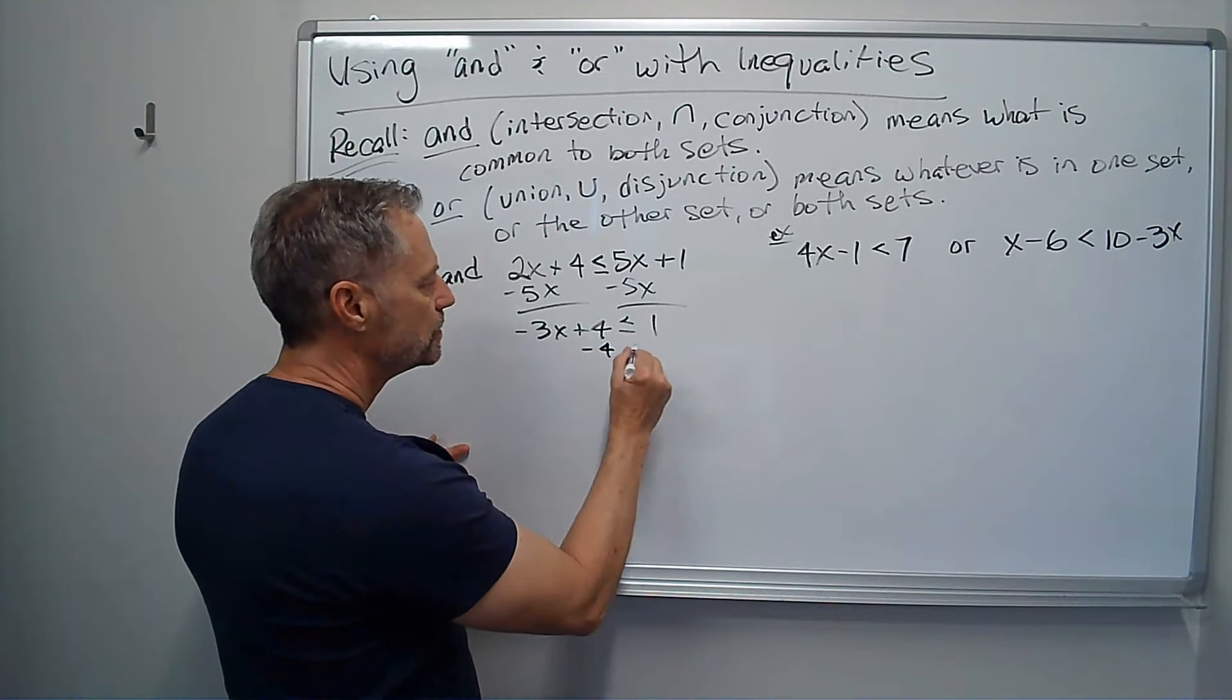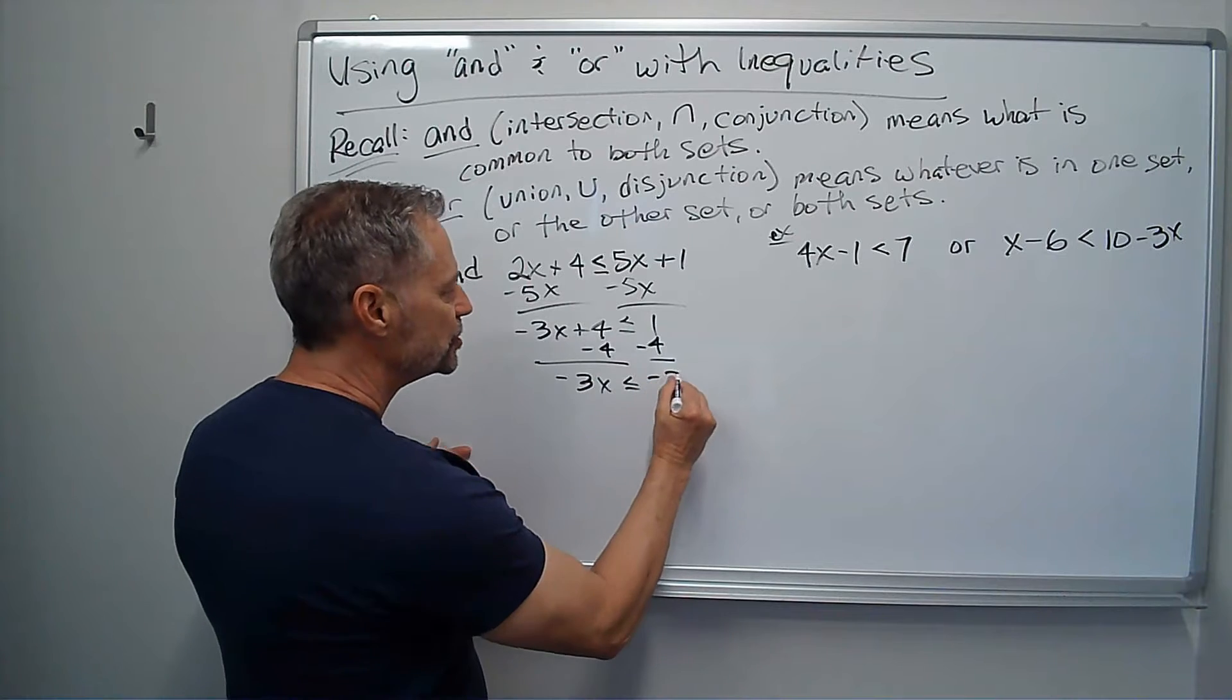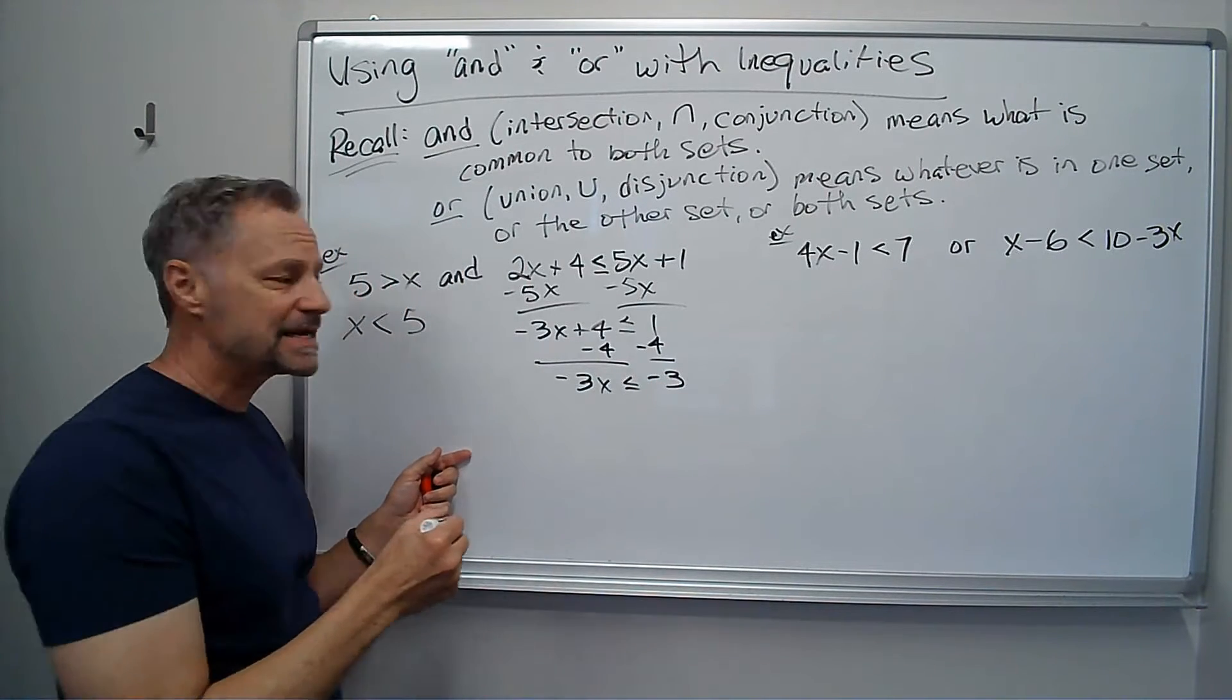So I get negative 3x plus 4 less than or equal to 1. Subtract the 4. So I'm just doing the normal algebraic steps we would do. And then divide by negative 3.